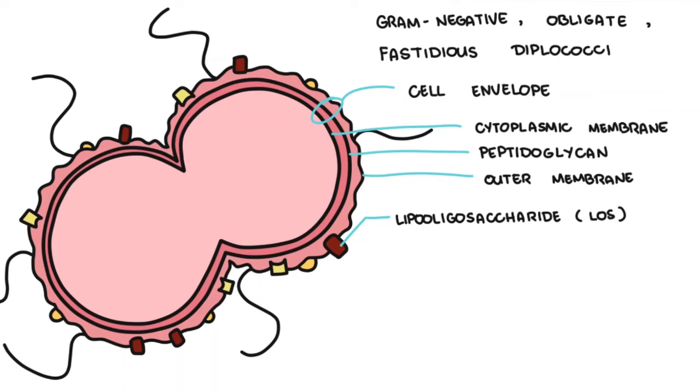The outer membrane also contains phospholipid and a variety of proteins that contribute to cell adherence, tissue invasion, and resistance to host defenses.